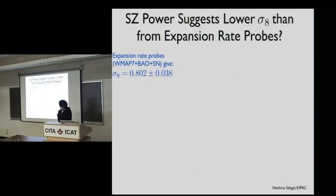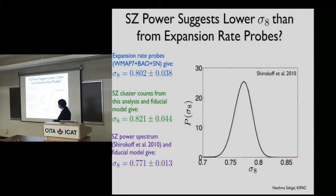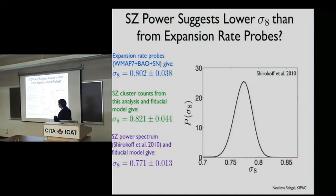So what do we have? The power spectrum approach gives sigma_8 around 0.8. The cluster analysis gives about 0.82 if we assume the fiducial model is correct. And the latest SPT result gives sigma_8 around 0.77, again assuming the same fiducial model. Right now, all of these are consistent with each other within the error bars. We have expansion-rate probes being consistent with two separate growth-of-structure probes.